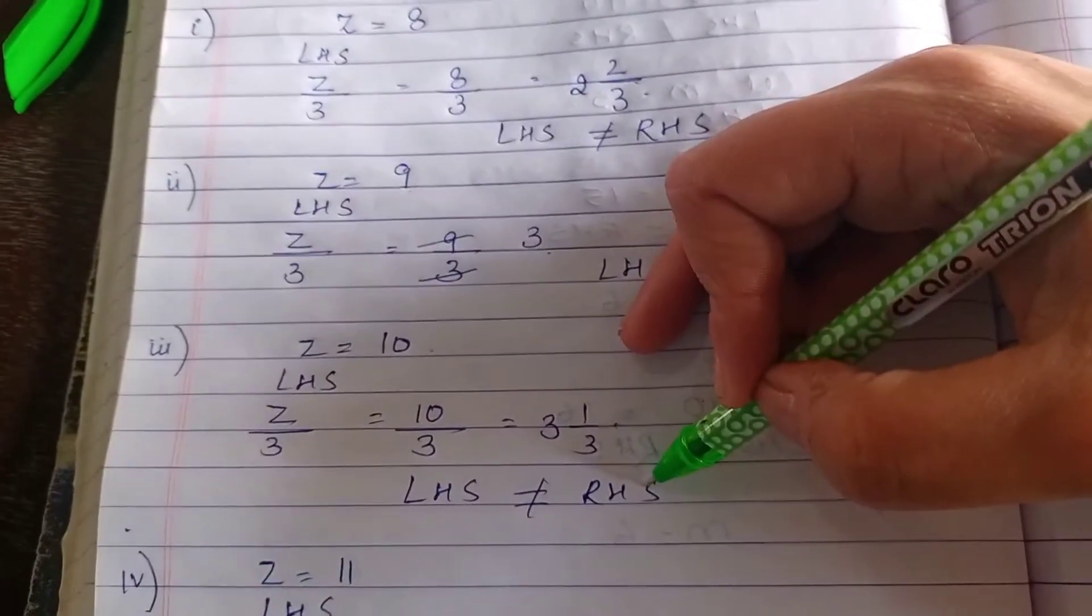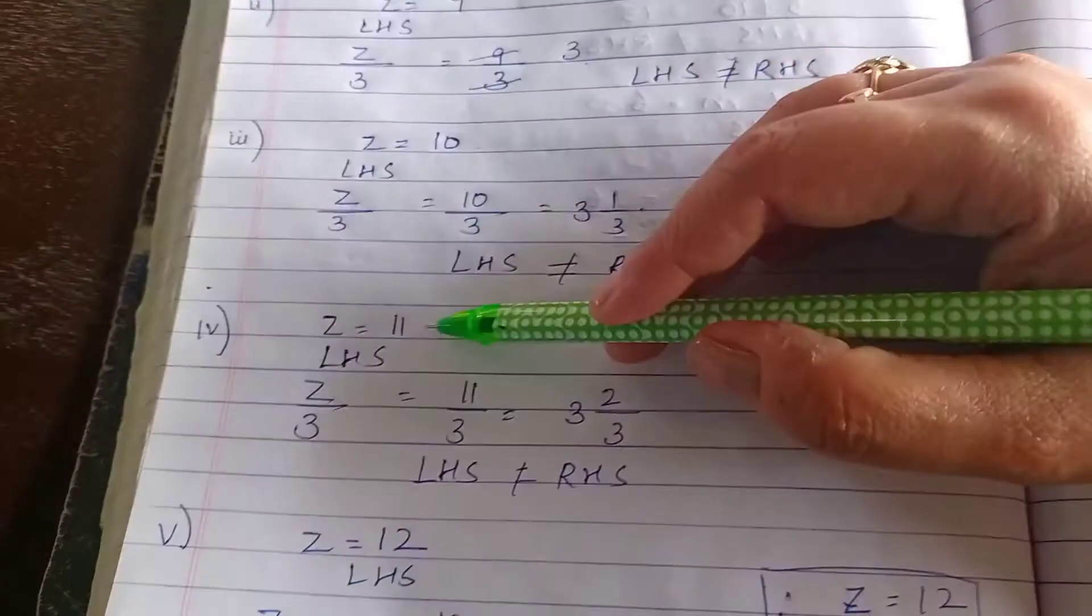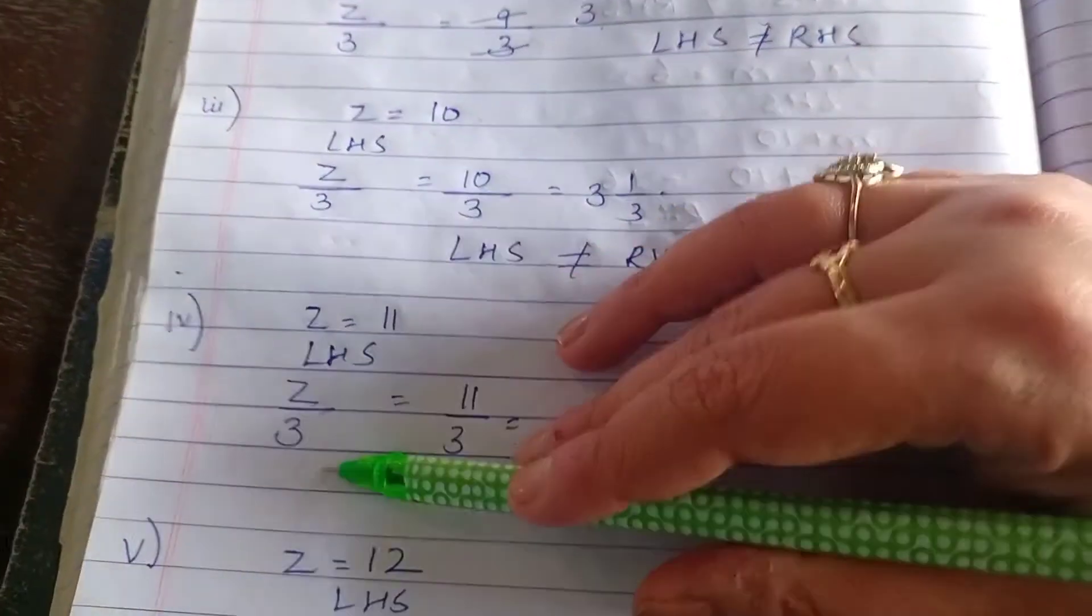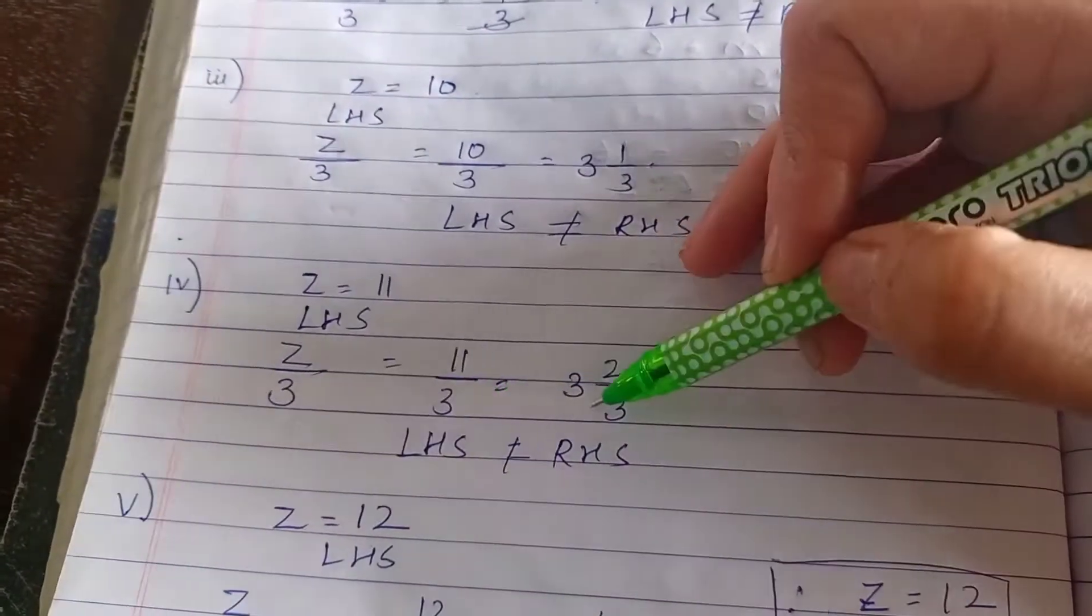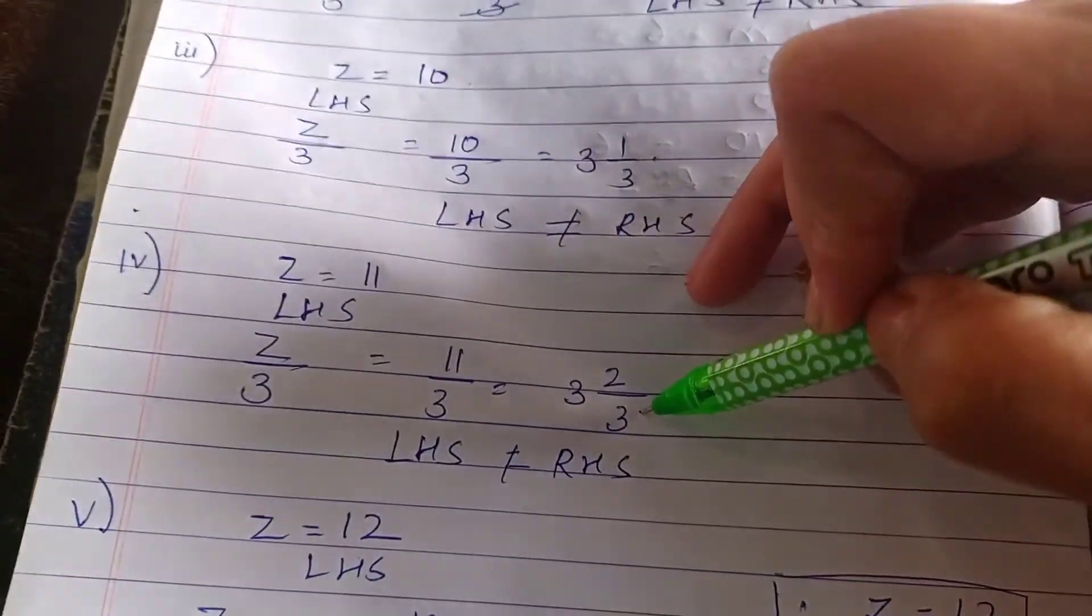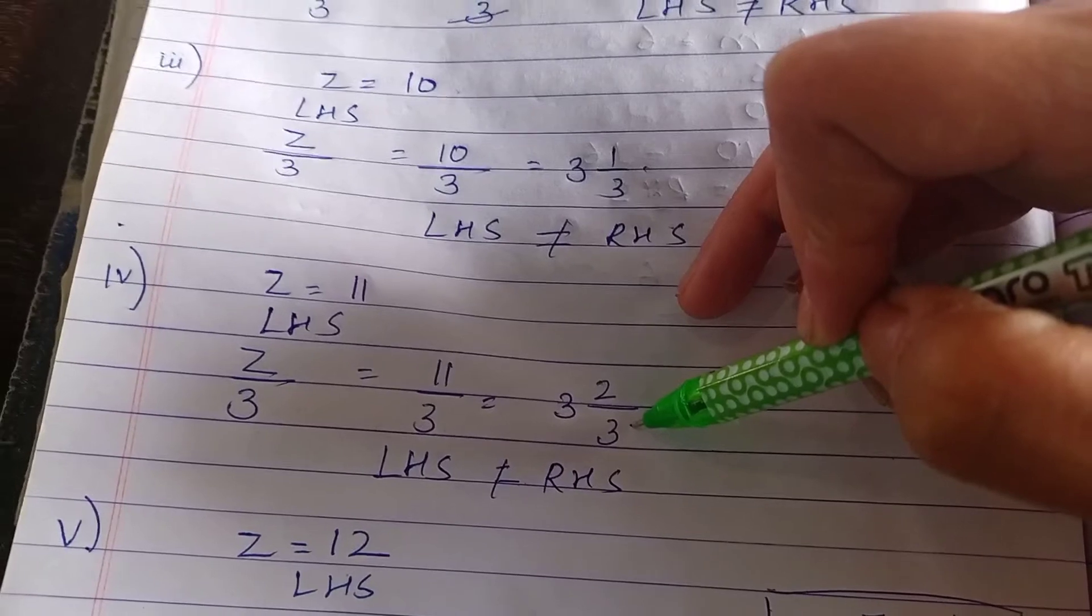Fourth time, I am keeping z as 11. As given in the question, z divided by 3. 11 divided by 3. Again, we are getting an improper fraction, converted into mixed form.